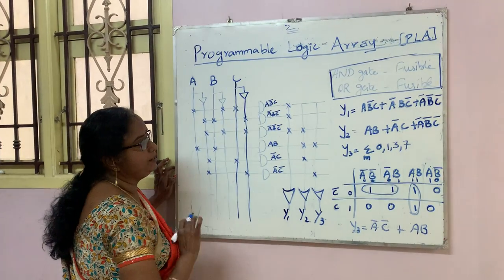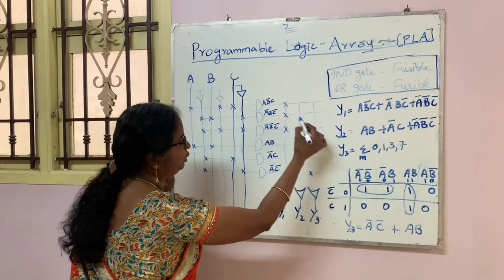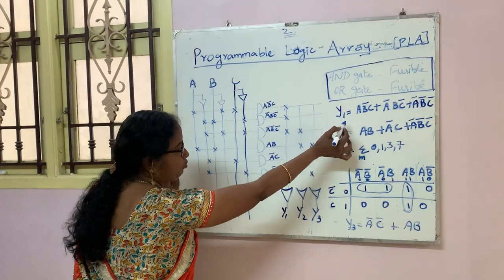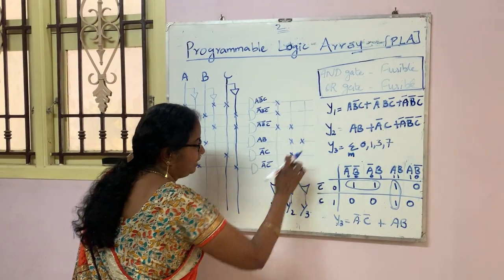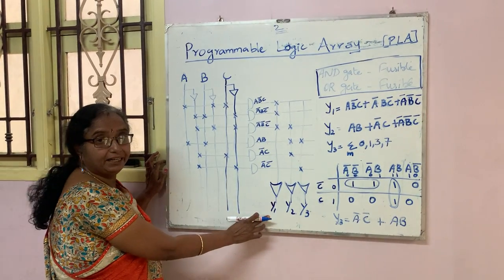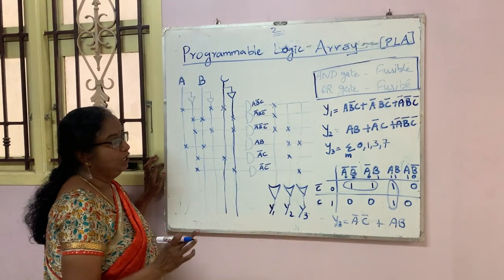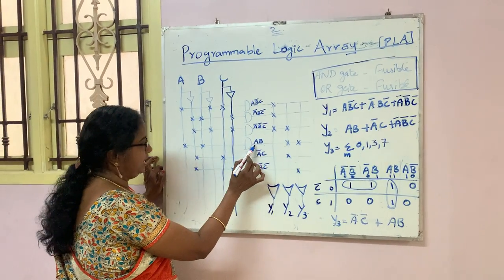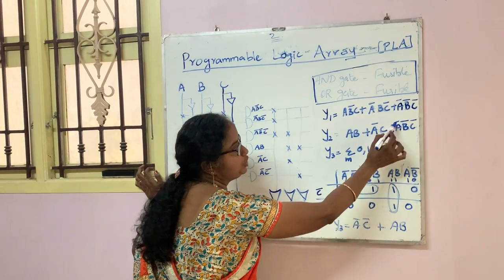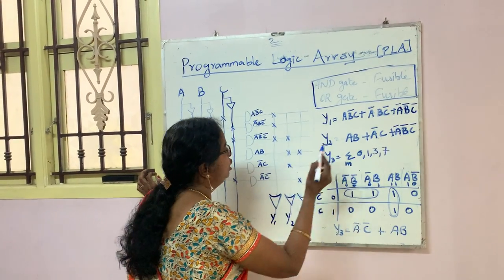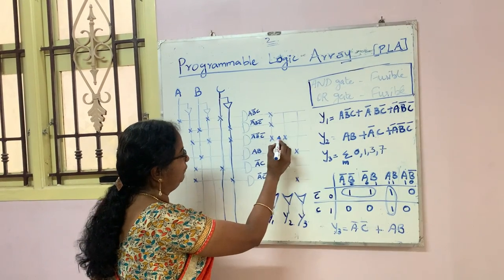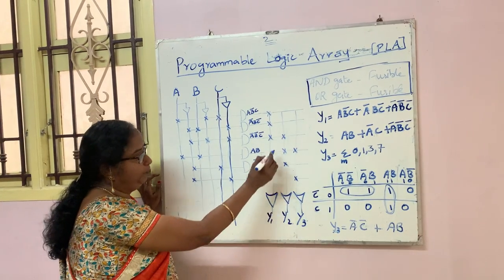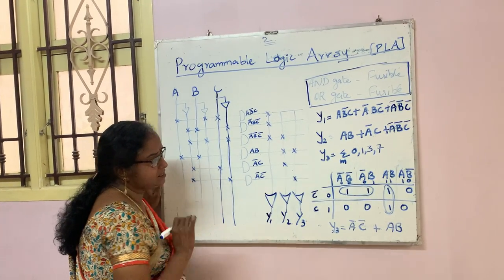So we connect those three terms of the Y1 equation using an OR gate, getting the output Y1. In the second equation Y2, we have AB plus ĀC̄ plus ĀB̄C̄. Since ĀB̄C̄ is a repetition from Y1, we can reuse that AND gate output rather than creating a separate gate. We connect these terms and get the output Y2.